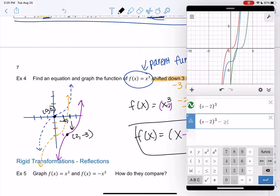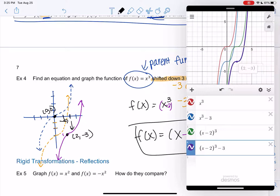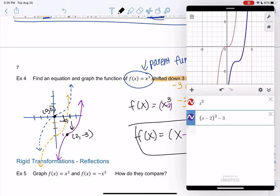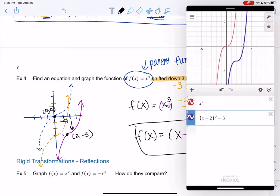And then minus 3. This is so hard to type on. And so now we can see that point is at 2, negative 3. And we can get rid of these guys. So there's my parent function in red. And then x minus 2, all cubed. And then minus 3.